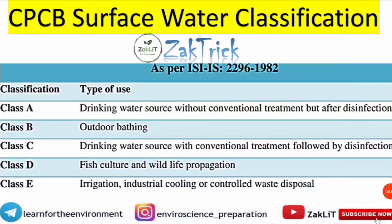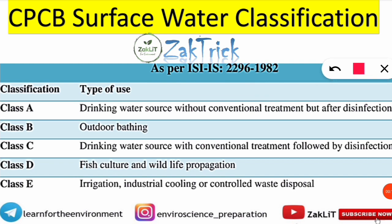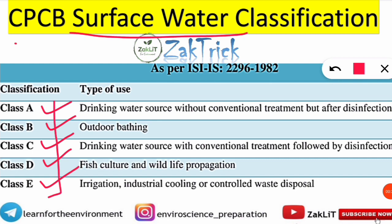CPCB, that is the Central Pollution Control Board, has classified surface water into five categories: Class A, Class B, Class C, Class D, and Class E. These are the different classes for surface water as per ISI Indian Standards 2296 of 1982.